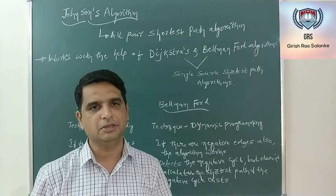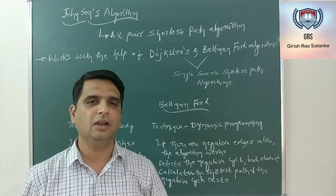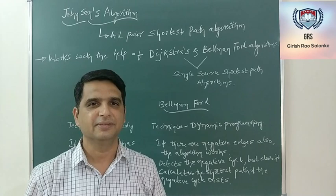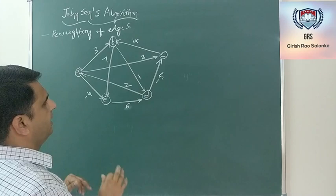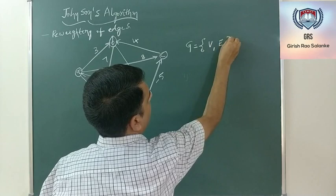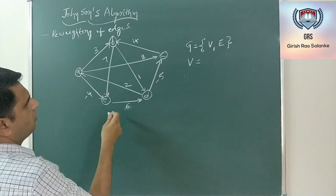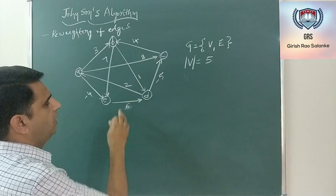Now coming back to Johnson's algorithm. The first step is called reweighting — we need to reweight the edges. Let's see what reweighting the edges means. Consider this graph G = (V, E) where V is the set of vertices and E is the set of edges. In this example there are 5 vertices and 9 edges.